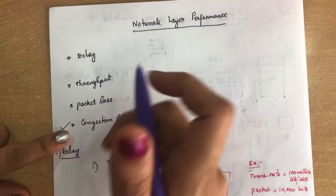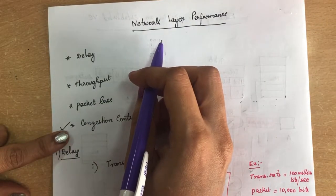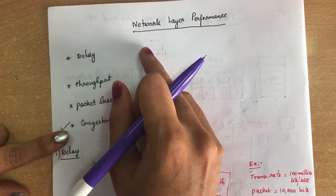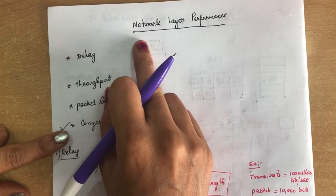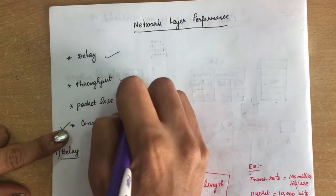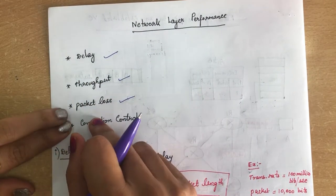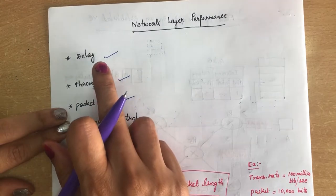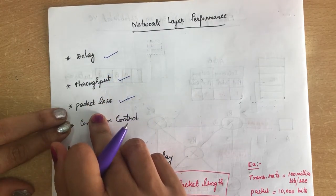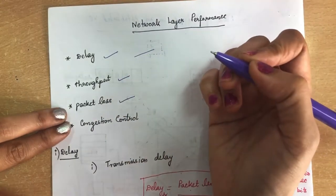We are going to see the network layer performance. The performance of this particular network is measured in terms of delay, throughput, or packet loss, and later we will see about congestion control. So it is measured through delay, throughput, and packet loss.